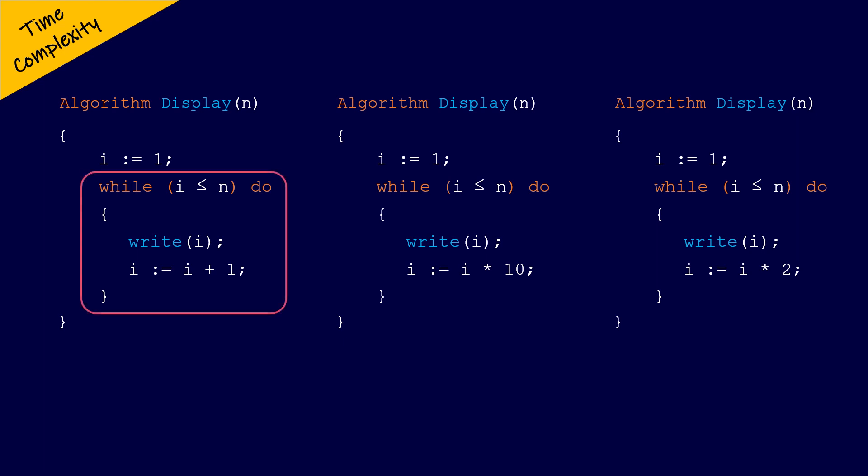The statements within the while loop of the first algorithm execute n times, because the variable i is incremented by one each time the loop is executed, and the condition is true for i less than or equal to n.